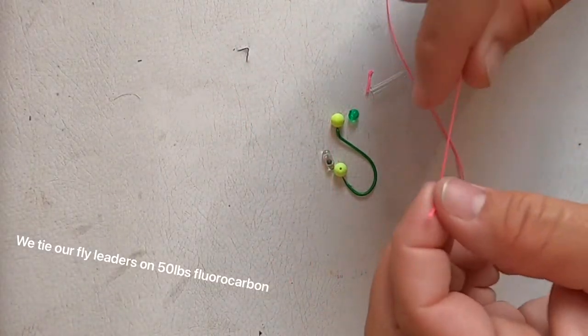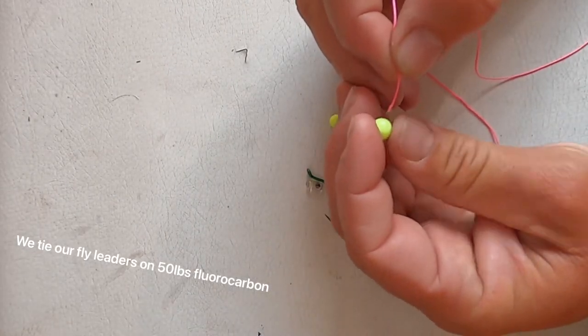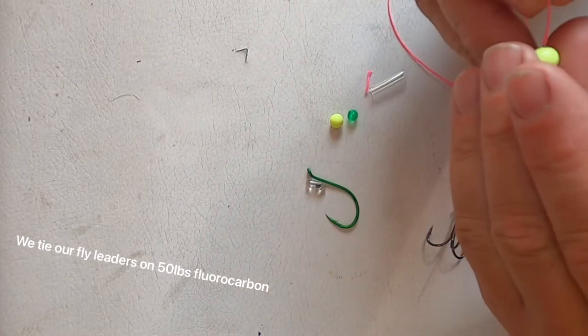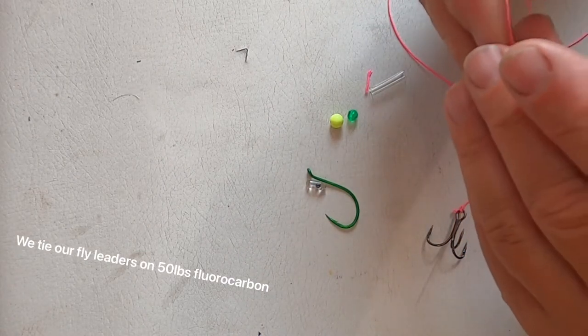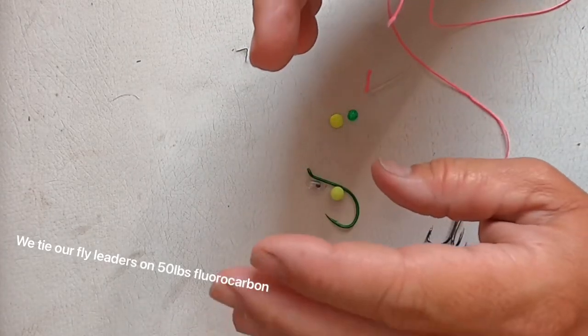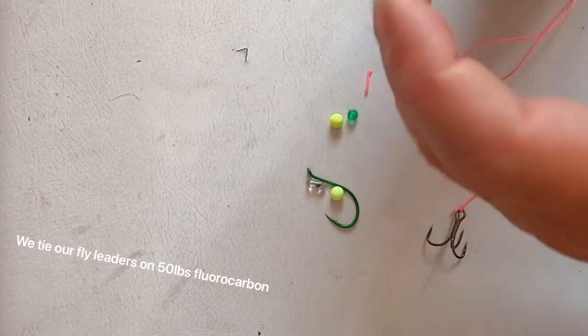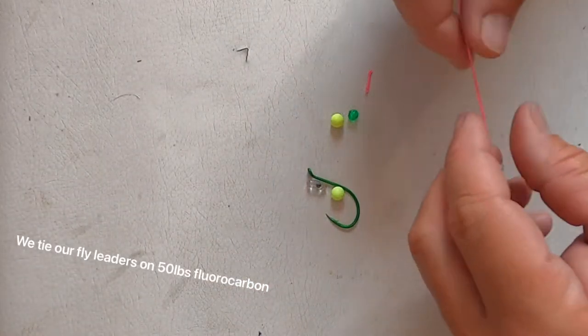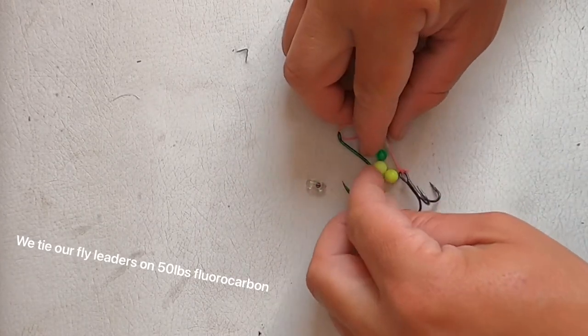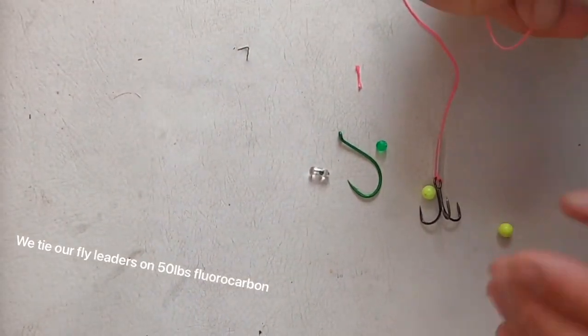So once I have the treble tied on I put on my beads. I'm going to slide my single on. All right, for the sake of argument let's just pretend these are our three beads, two chartreuse and a green. So that's going to be about how long my beads would be. Obviously the rig equals the length of the beads, so once I have my beads on there above my treble hook.